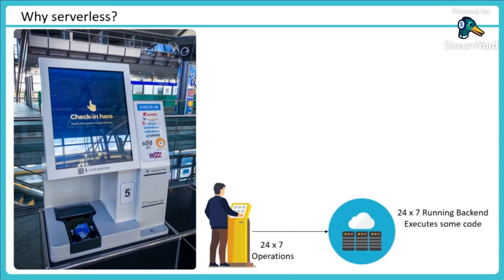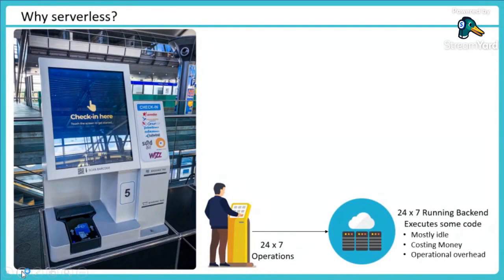This back end server may be serving multiple kiosks. What the back end is actually doing is processing: when you enter your PNR number, it checks what kind of passenger you are, whether you've fulfilled the requirements, shows your booking ID, gives you the option to print your boarding pass, or change your seat. That back end is processing only when somebody requests something. But I have to keep it running for a very long period, meaning it is mostly idle and costing me money to keep it running 24/7, with operational overhead as well.